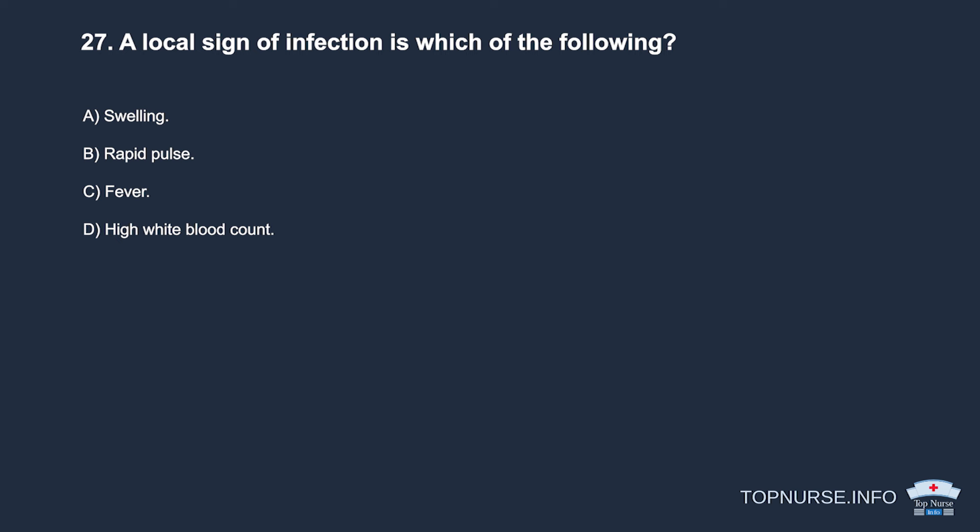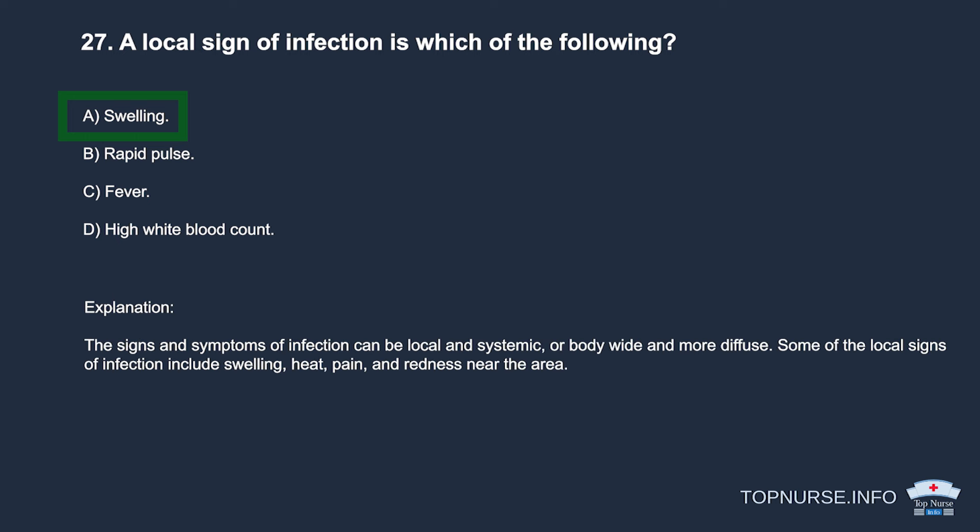Question 27: A local sign of infection is: a. Swelling. b. Rapid pulse. c. Fever. d. High white blood count. Correct answer: a. Swelling. Signs and symptoms of infection can be local and systemic. Local signs include swelling, heat, pain, and redness near the affected area.